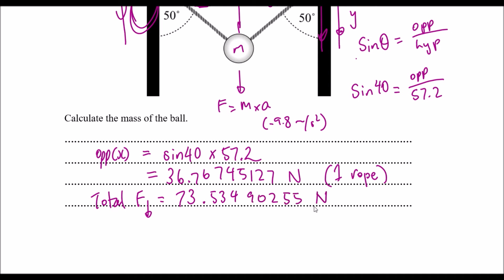So if we then use that to find the overall mass, which is this formula that we have here. Now mass is a scalar quantity, so we don't need to account for the negative component of acceleration. So mass is equal to force, which is 73.5, divided by 9.8. And I'm just going to round it off.